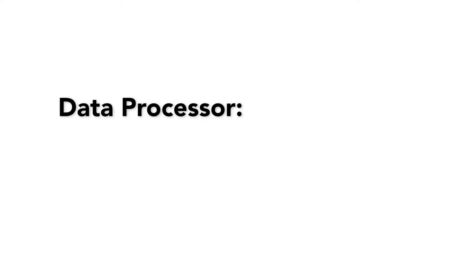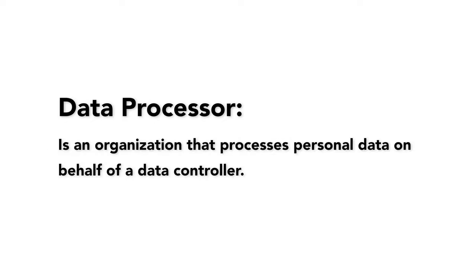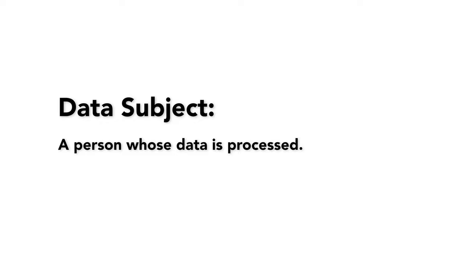The second term is data processor. A data processor is an organization that processes personal data on behalf of the data controller. For example, this can be a third-party service that is plugged into your website or app, such as an analytics tool like Google Analytics, or a cloud service such as Amazon Web Services that has access to or hosts your customer's data. The third term is data subject — a person whose data is processed, for example, an app user or a website visitor.